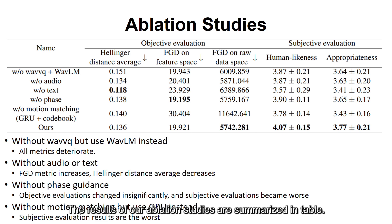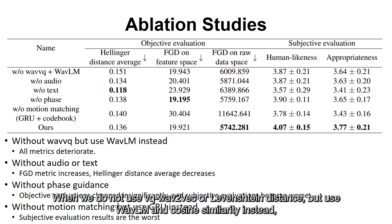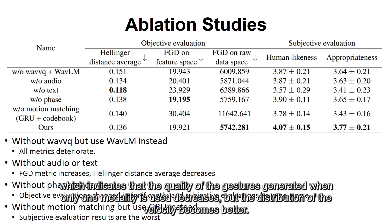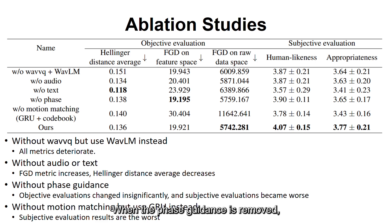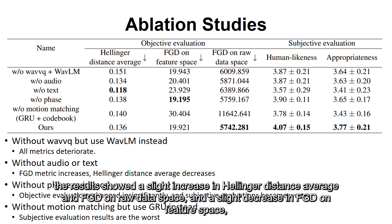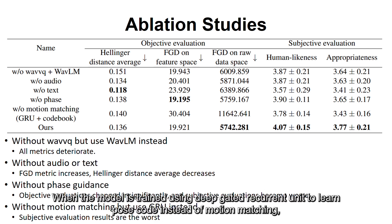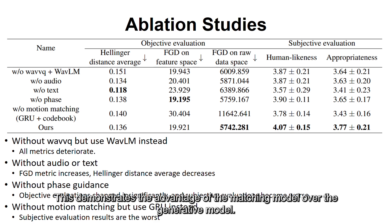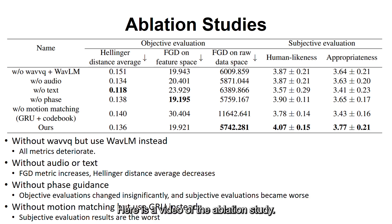The results of our ablation studies are summarized in the table. When we do not use VQ-WAV2VEC or Levenshtein distance but use WaveLM and cosine similarity instead, the performances of all metrics deteriorate. When one of the modalities—text or speech—is not used, the FGD metric increases while the Hellinger distance average decreases, indicating that gesture quality decreases but velocity distribution improves. When phase guidance is removed, there is a slight increase in Hellinger distance average and FGD on raw data space, and a slight decrease in FGD on feature space, but none of the changes are significant. When the model is trained using a deep gated recurrent unit to learn pose code instead of motion matching, FGD on feature space and raw data space deteriorate, demonstrating the advantage of the matching model over the generative model.